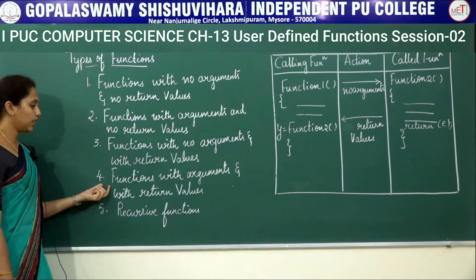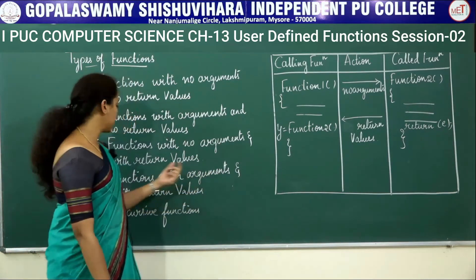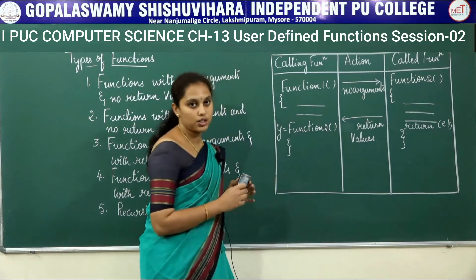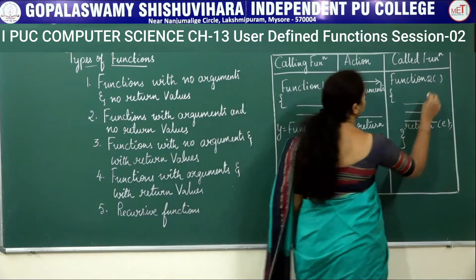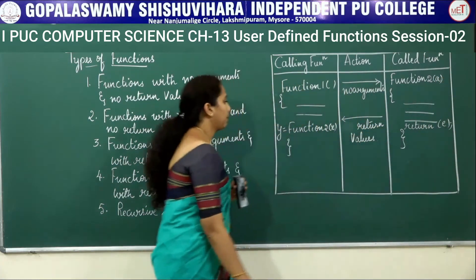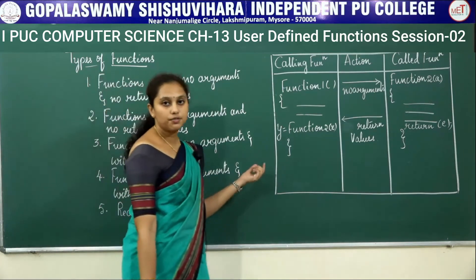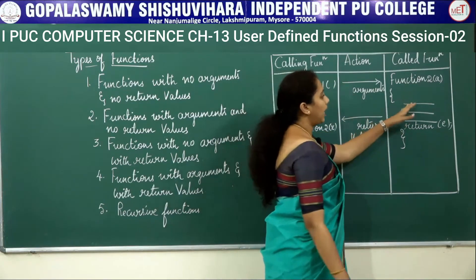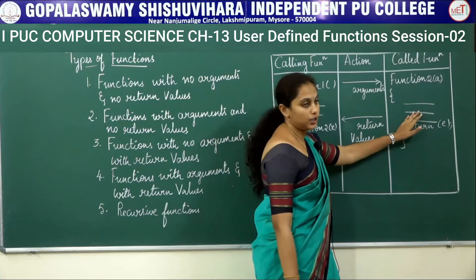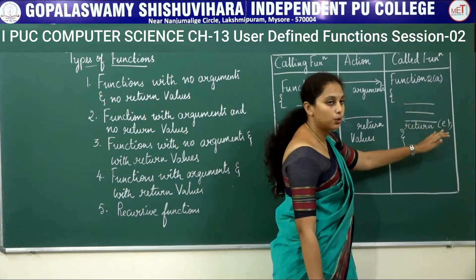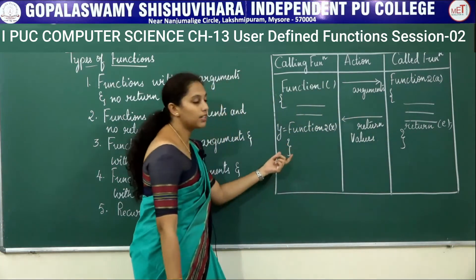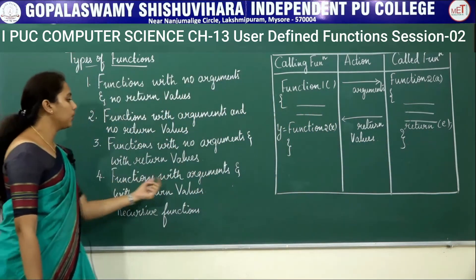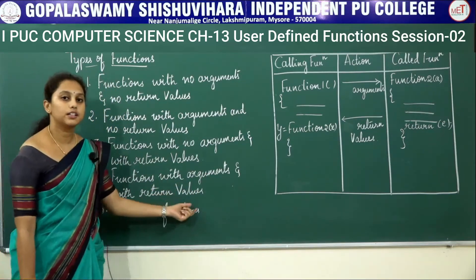The next type is functions with arguments and with return values. In this type, the first function calls the second function by passing some arguments. After performing the operations in function 2, function 2 sends back the result to function 1 using a return statement. This is called functions with arguments and with return values.